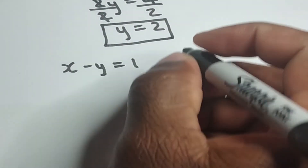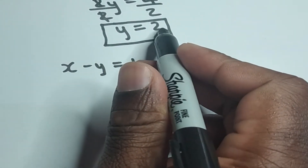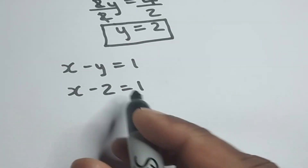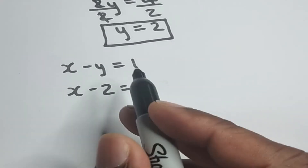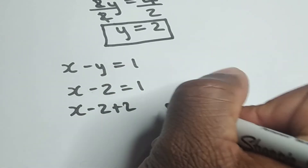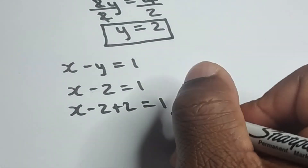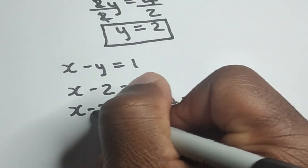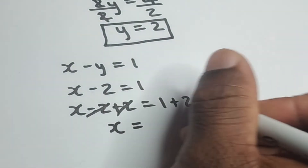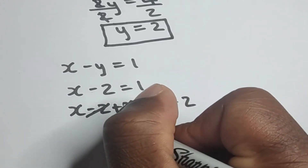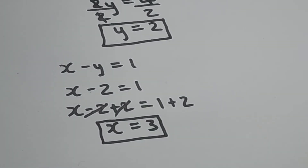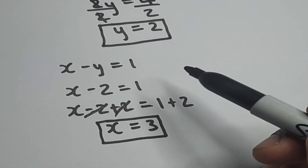We know that y is two, so wherever I have y I replace it with two: x minus two is equal to one. I can transpose for x by adding two to both sides — minus two plus two cancel out — so x is equal to one plus two, which is three. The value of x is three and the value of y is two. That's how we solve a simultaneous equation using the substitution method.